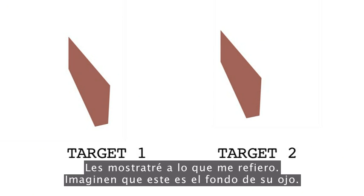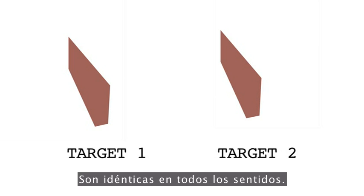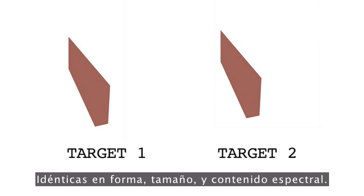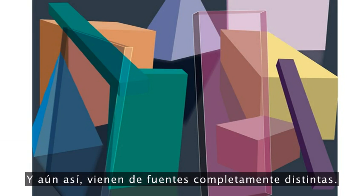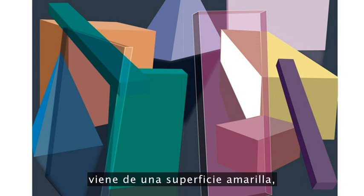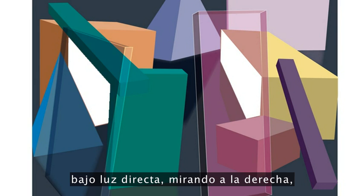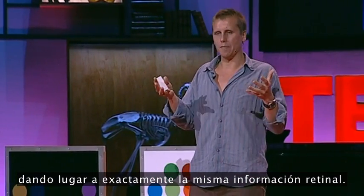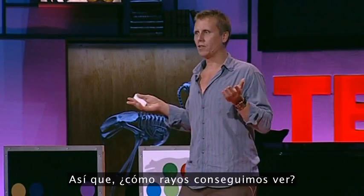Imagine that this is the back of your eye, and these are two projections from the world. They're identical in every single way — identical in shape, size, spectral content. They are the same as far as your eye is concerned, and yet they come from completely different sources. The one on the right comes from a yellow surface in shadow, oriented facing the left, viewed through a pinkish medium. The one on the left comes from an orange surface under direct light, facing to the right, viewed through a sort of bluish medium. Completely different meanings, giving rise to the exact same retinal information — and yet it's only the retinal information that we get. So how on earth do we even see?